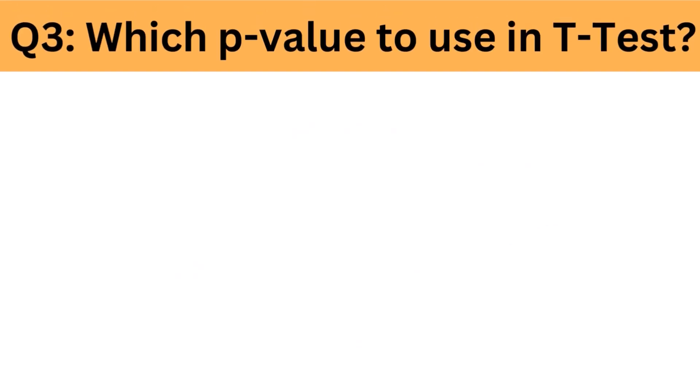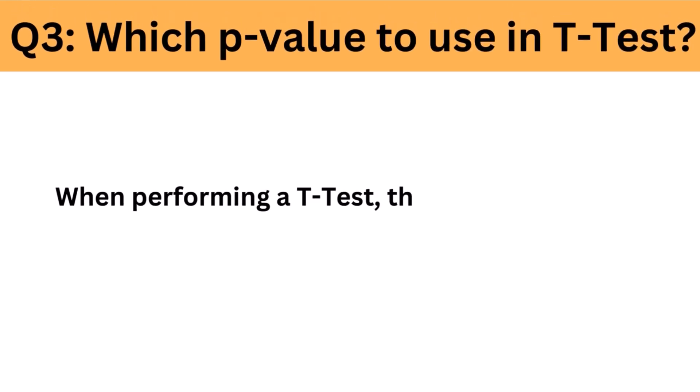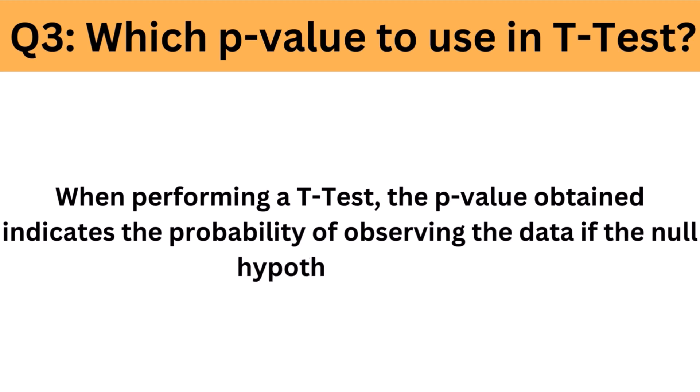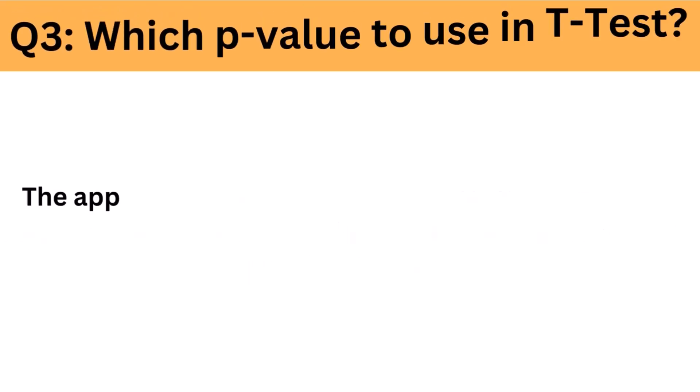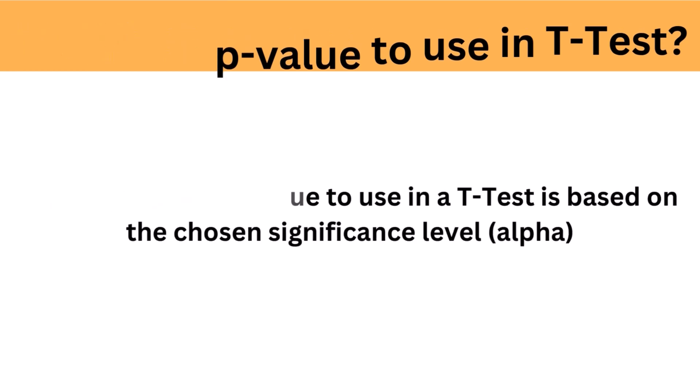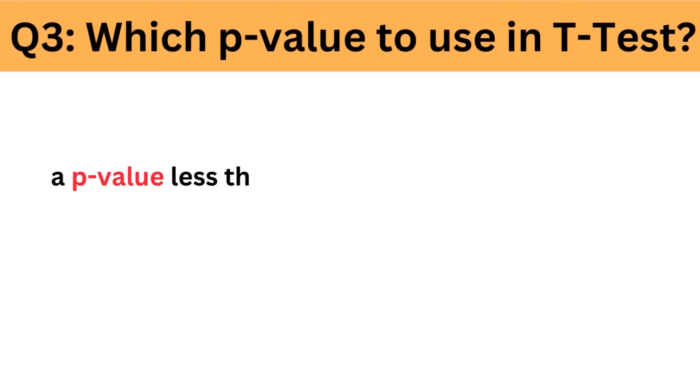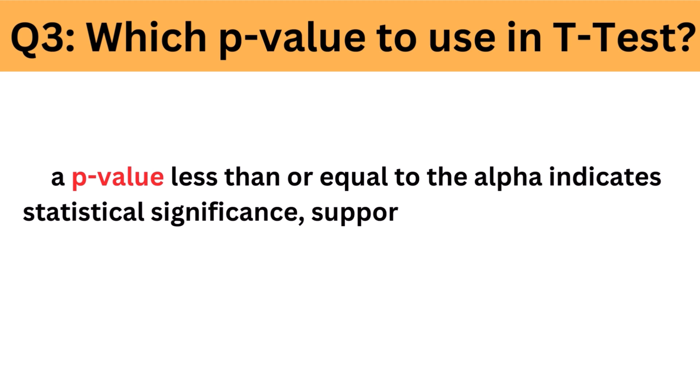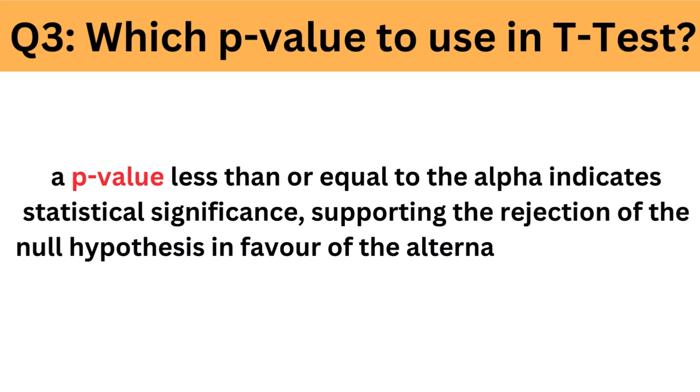Which p-value to use in t-test? When performing a t-test, the p-value obtained indicates the probability of observing the data if the null hypothesis is true. The appropriate p-value to use in a t-test is based on the chosen significance level, alpha. Generally, a p-value less than or equal to the alpha indicates statistical significance, supporting the rejection of the null hypothesis in favor of the alternative hypothesis.